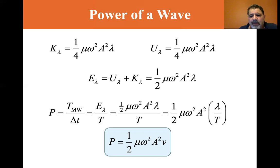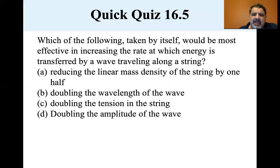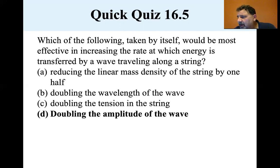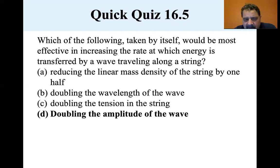Power equals one-half μ ω² A² v. The answer is D — doubling the amplitude — because doubling the amplitude causes the power to increase by a factor of four. In choice A, halving the linear mass density changes the power by a factor of about 0.71, so the rate decreases. In choice B, doubling the wavelength halves the frequency, causing power to change by a factor of 0.25, so the rate decreases. In choice C, doubling the tension changes the wave speed and causes the power to change by a factor of 1.4, which is not as large as doubling the amplitude.